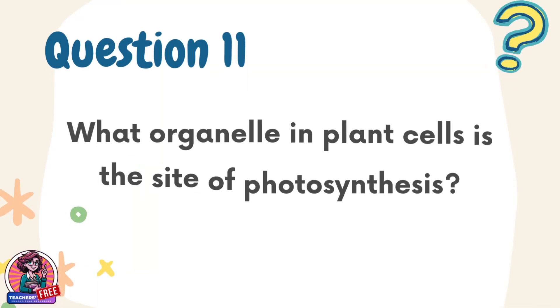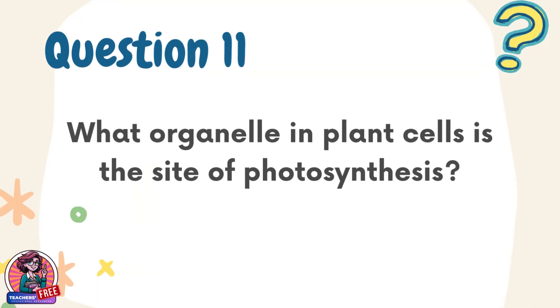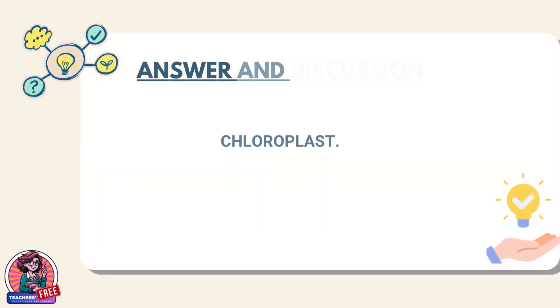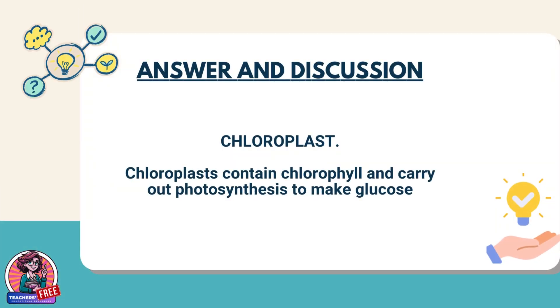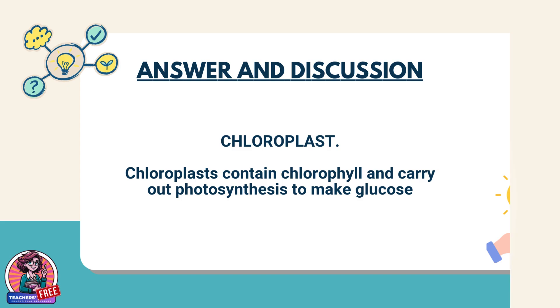Question 11. What organelle in plant cells is the site of photosynthesis? Answer: Chloroplast. Chloroplasts contain chlorophyll and carry out photosynthesis to make glucose.